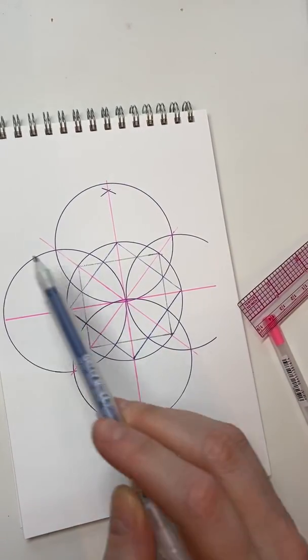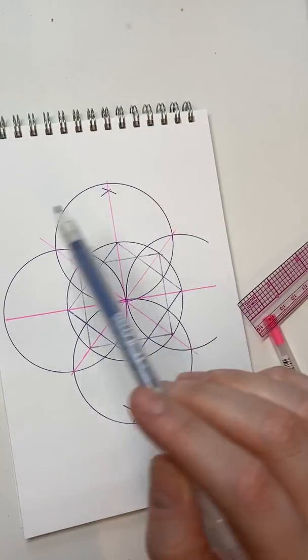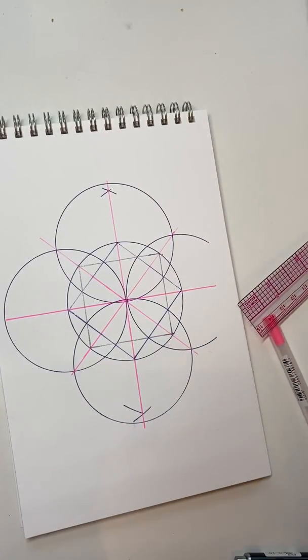Now, if you want to, if you add another circle here, and you add another circle here, and you add another circle here, you can tile it. And I'll show you that in another video.